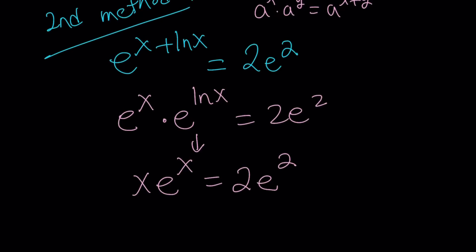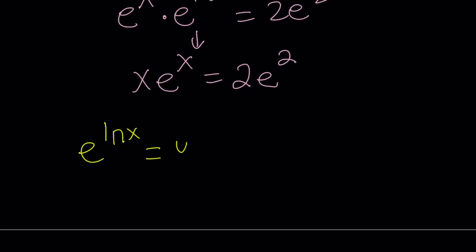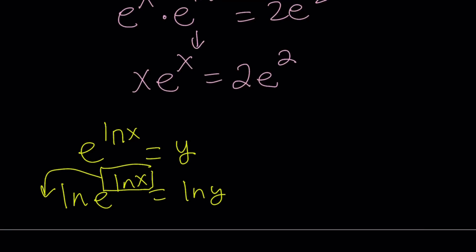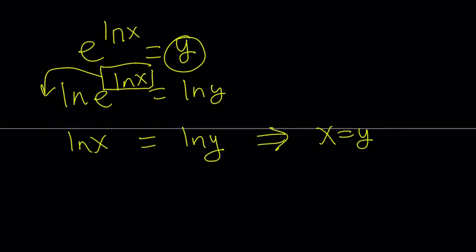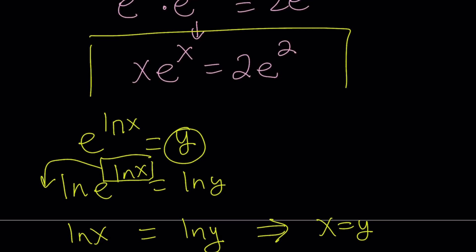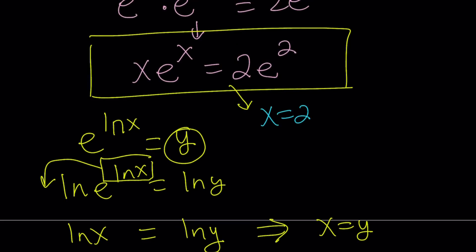To see why e to the power of ln x equals x: suppose we call it y, then take ln of both sides. We get ln x times ln e, which is 1, so ln x equals ln y, which implies x equals y. Therefore e to the power ln x equals x, and our equation x times e to the x equals 2e squared is valid. Again we can see x equals 2 works, but we need to ask: is that the only solution?